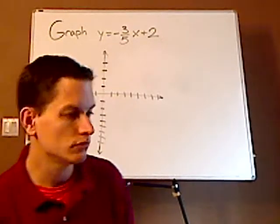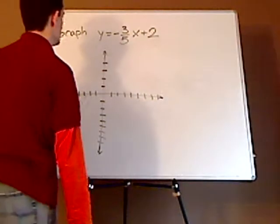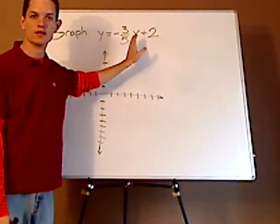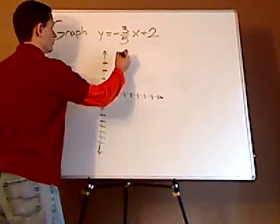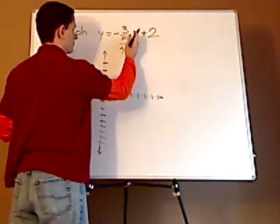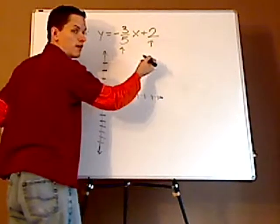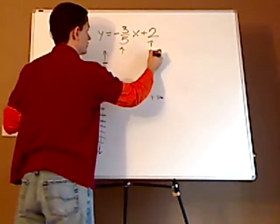All right, now you use slope-intercept form. This would be your slope, whatever's in front of the X, and whatever's by itself, there is no X, is your Y-intercept.